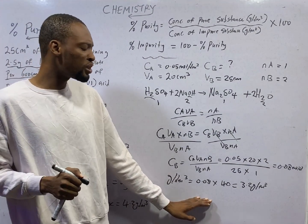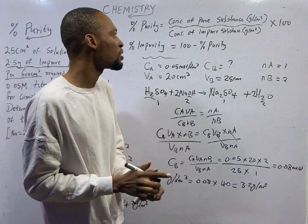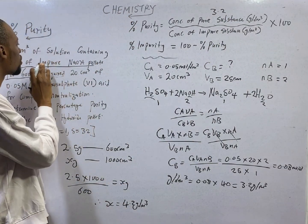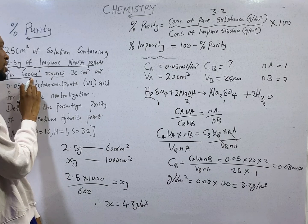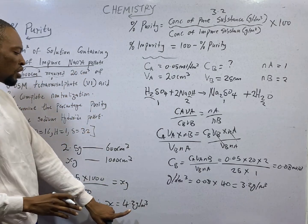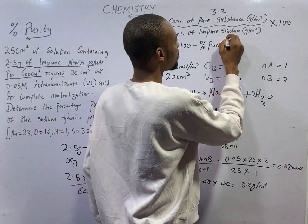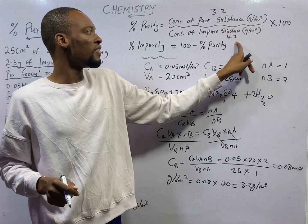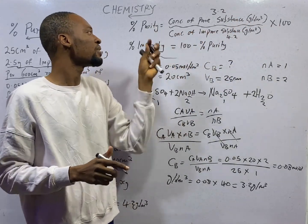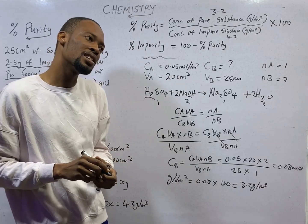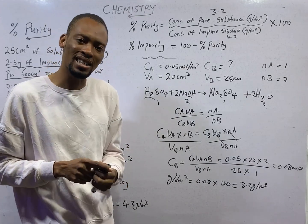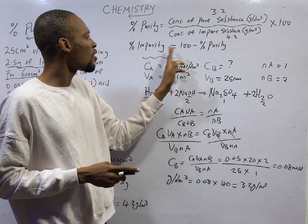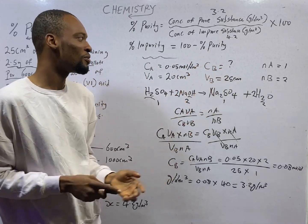We have gotten the concentration of the pure sodium hydroxide as 3.2 g/dm³. The concentration of the impure substance, after converting from 600 cm³ to 1 dm³, is 4.2 g/dm³. So percentage purity = 3.2 ÷ 4.2 × 100 = 76.2%. If you are asked for percentage impurity, it will simply be 100 minus the percentage purity.